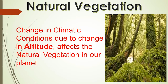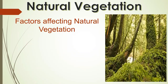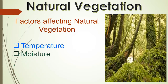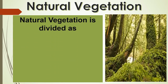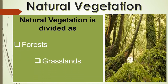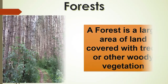With the change in height, the climatic condition changes, and that changes natural vegetation. The growth of vegetation depends on temperature and moisture. It also depends on factors like slope and thickness of soil. The type and thickness of natural vegetation varies from place to place due to these factors. Natural vegetation is divided into three broad categories: forests, grasslands and shrubs.